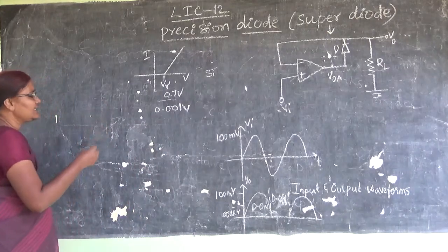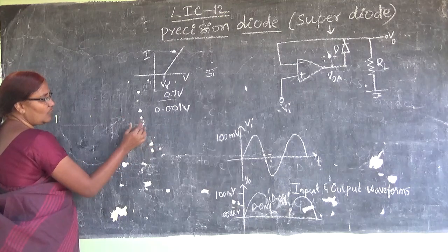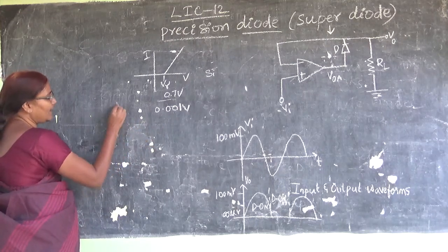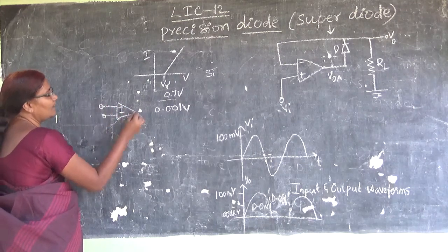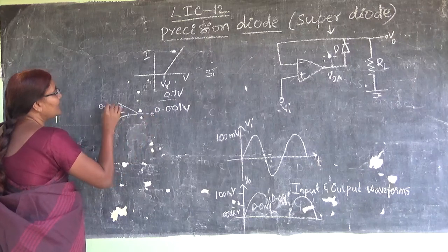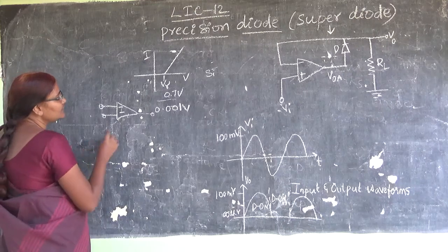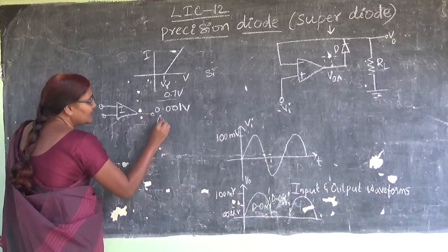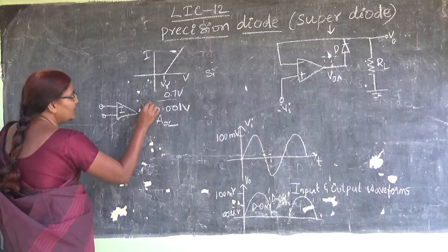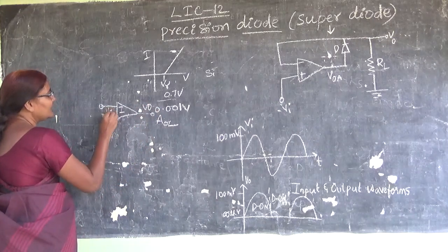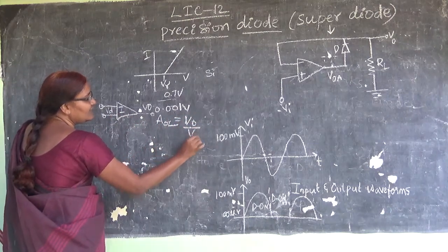In open loop operation of an op-amp, no feedback path will be connected. This path is absent. I will get some gain, called AOL — the open loop gain. V0 divided by VD will give that gain.